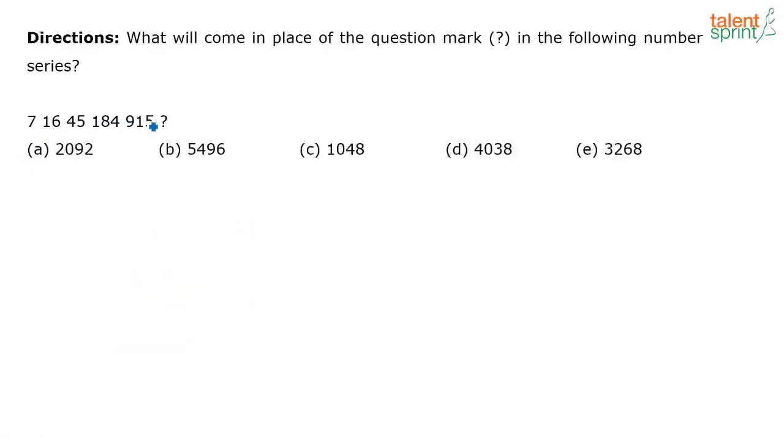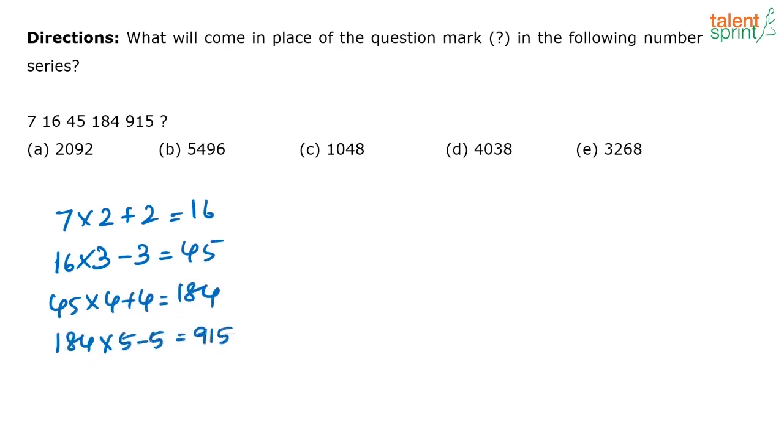7, 16, 45, 184. See here the pattern is this. 7 into 2 plus 2 that is equal to 16. 16 into 3 minus 3 which is equal to 45. 45 into 4 plus 4 that is equal to 184. So the next number will be 915 into 6 plus 6. Correct answer is option B.